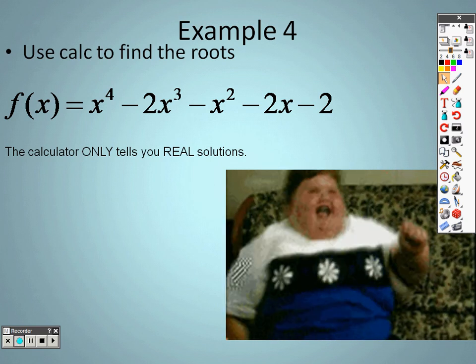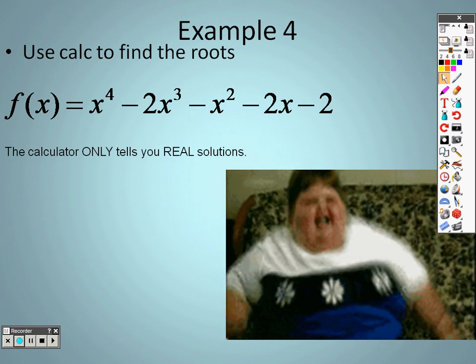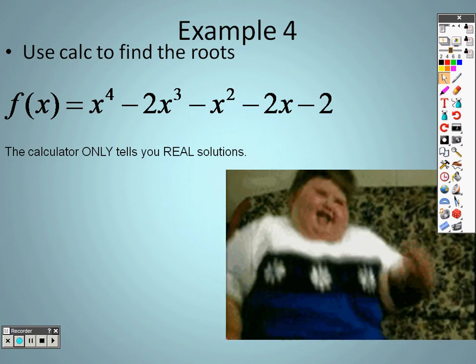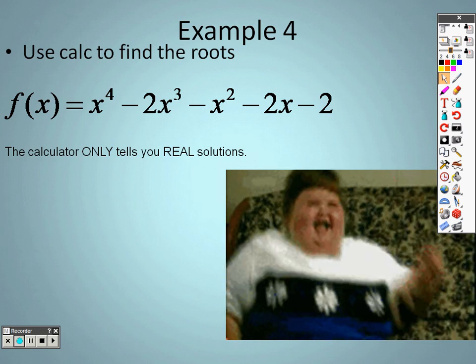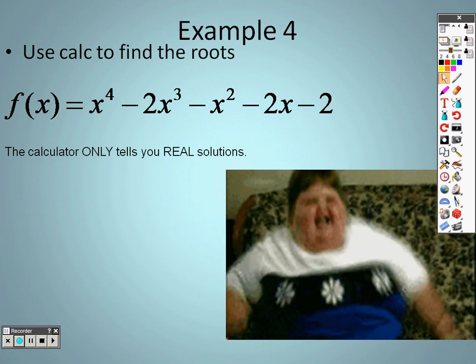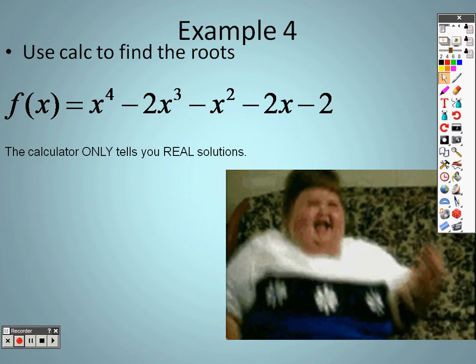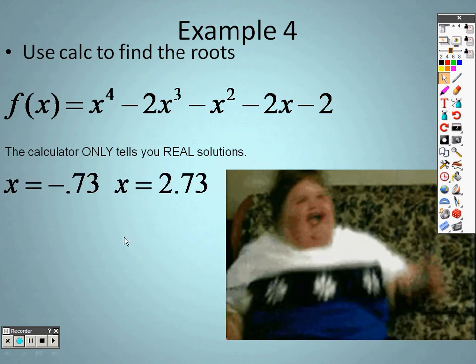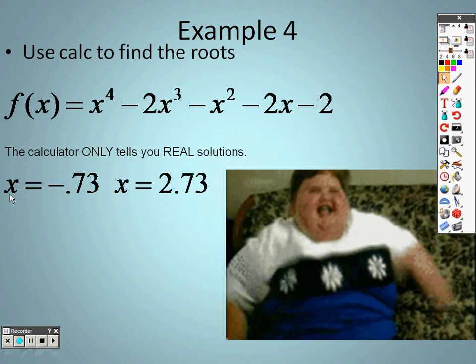So you press second trace again, go down to zero, and when you go, it says left bound again, but now to the left of that point is actually below the x-axis. So I press enter. The right of that point is actually above the line. Press guess, and we figure out that x is 2.73. So we got our answers as x is negative 0.73 and x is 2.73.